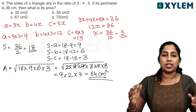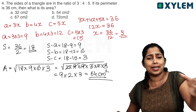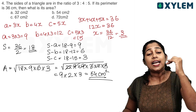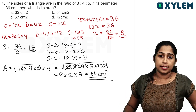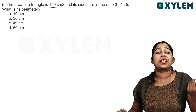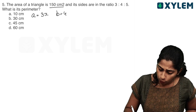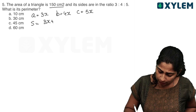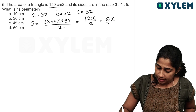There are tricks and practices for this type of problem. The area of the triangle is 150 cm². The sides are in the ratio 3 to 4 to 5. What is the perimeter? We let a equals 3x, b equals 4x, c equals 5x. S is equal to 3x plus 4x plus 5x divided by 2, which is 12x divided by 2 equals 6x.